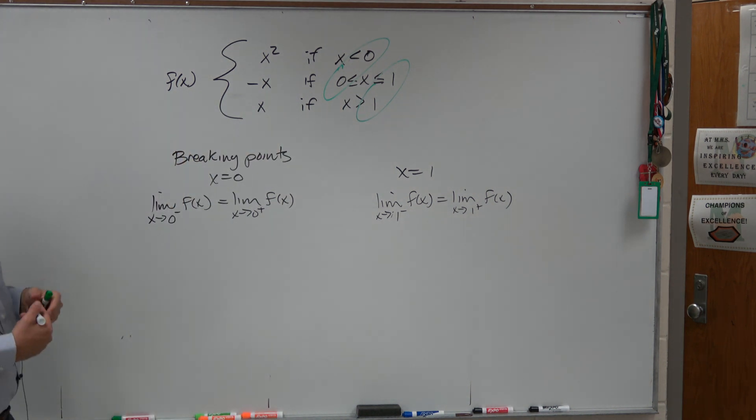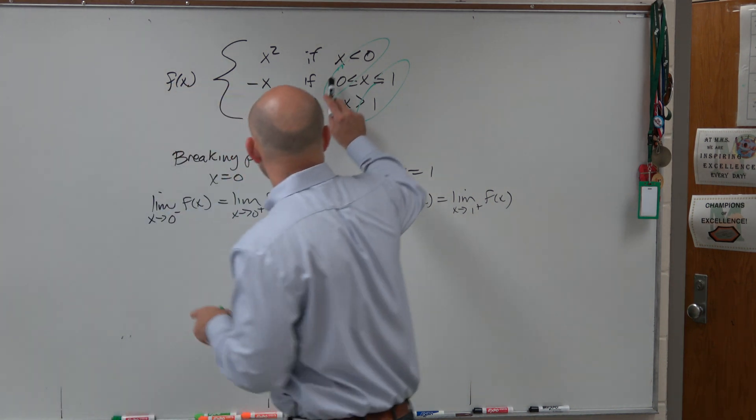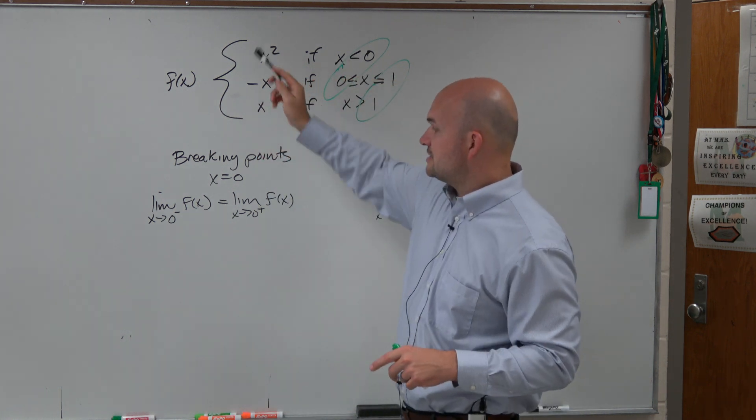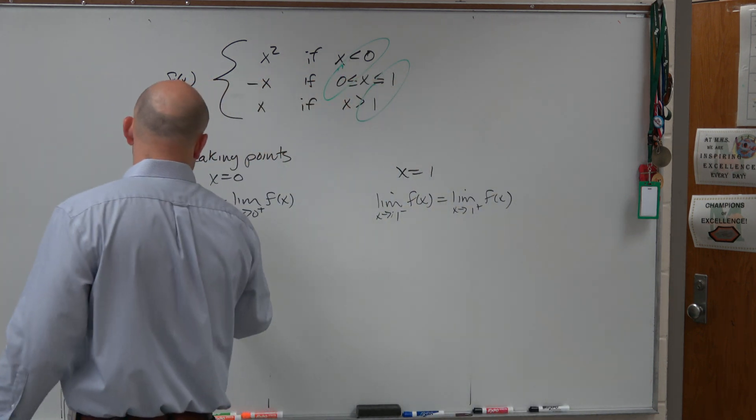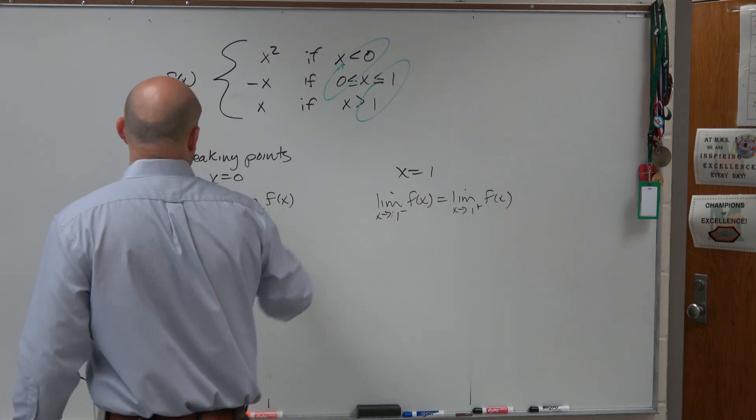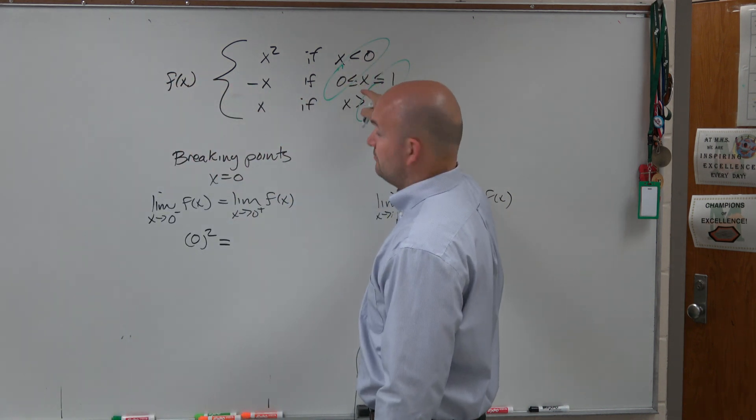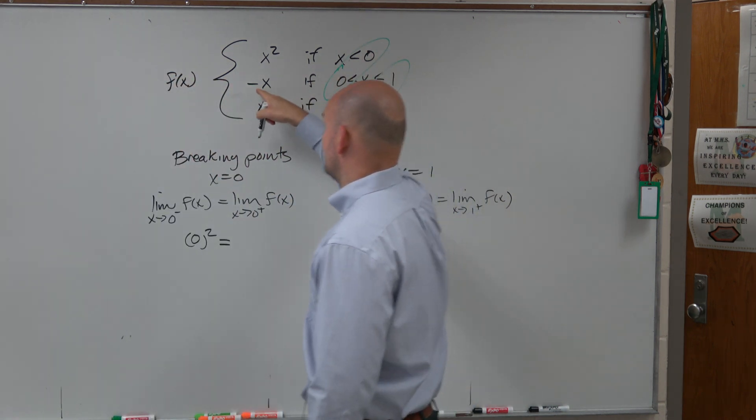All we want to do now is just basically check the left-hand limit. So the left-hand limit of 0 is going to be x squared. So we're going to have 0 squared has to equal the right-hand limit, which is going to be values that are greater than 0, which is negative x.